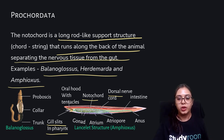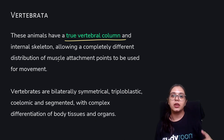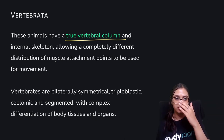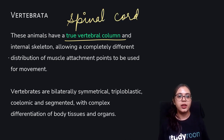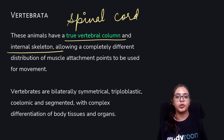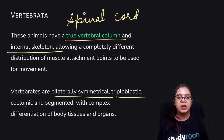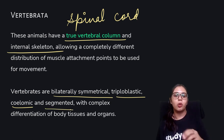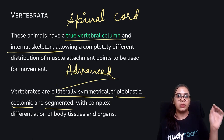Finally, Vertebrata are those Chordata that have a true vertebral column — in the adult stage the notochord is further differentiated into a true vertebral or spinal column. This allows a completely different distribution of muscle attachment points. Vertebrates are also bilaterally symmetrical, triploblastic, coelomic, and segmented, with complex differentiation of body organs and tissues. This is the most advanced level of body organization.